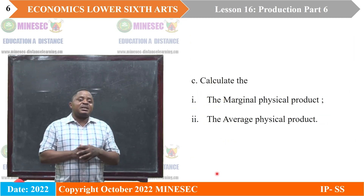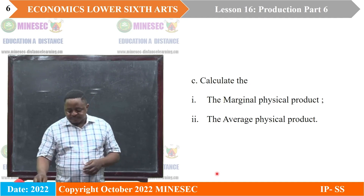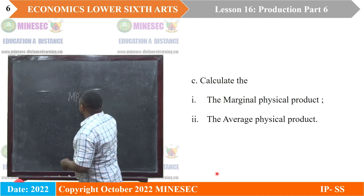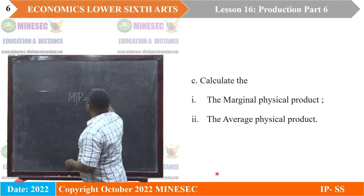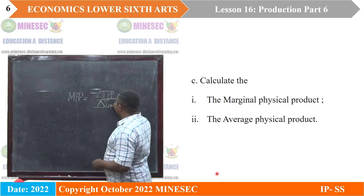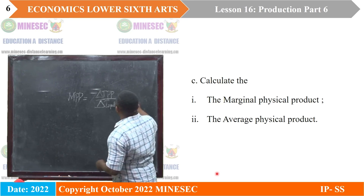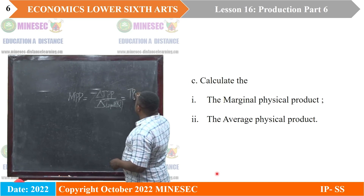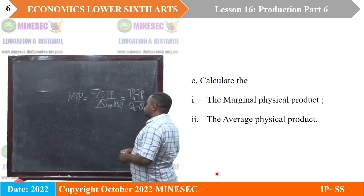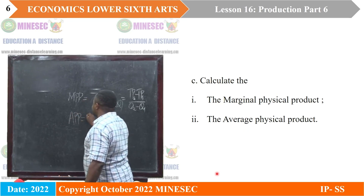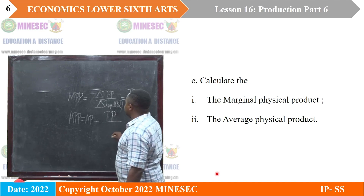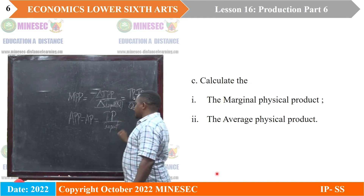For us to calculate the marginal physical product and the average physical product: the formula for marginal physical product, MPP, is equal to change in total physical product over change in input. That means total product 2 minus total product 1, over input 2 minus input 1. As for the average physical product — the same as average product — we take total product over input, which is number of workers.